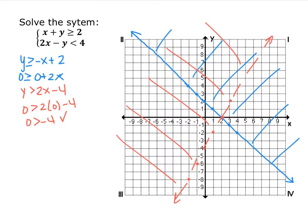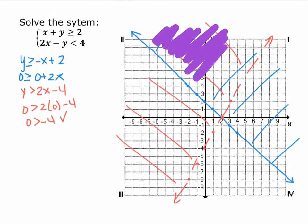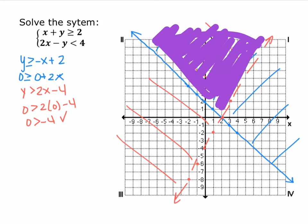The next one, y is greater than 2x minus 4, y intercept of negative 4, a slope of 2. It has a dotted line because there's no or equal to. I plugged in 0, 0, 0 is greater than negative 4, so I included the origin. So now your solution to the system is where you shaded for both of them. So the solution would be this part up in here that was included in both of the inequalities.